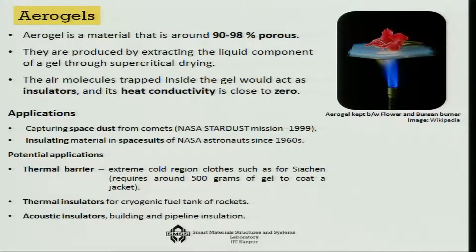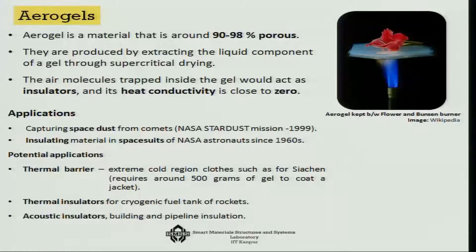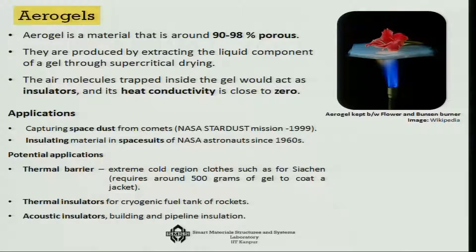Then there comes a very interesting type of material called aerogel. Aerogel is a material which is 90 to 98 percent porous - very highly porous. It is produced by extracting the liquid component of a gel through a supercritical drying process which extracts all the moisture. Once you do that, the air molecules trapped in the gel act as insulators and its heat conductivity will be almost close to zero. Aerogels are nowadays used as thermal barriers, thermal insulators, and acoustic insulators.